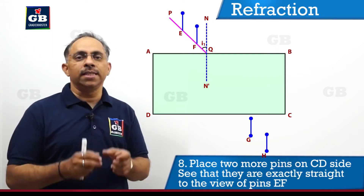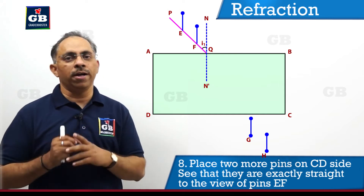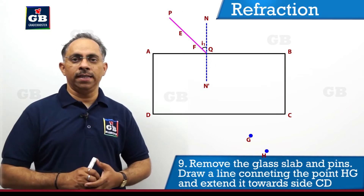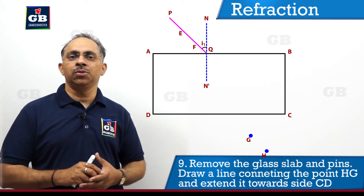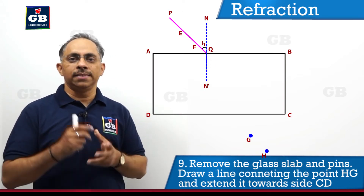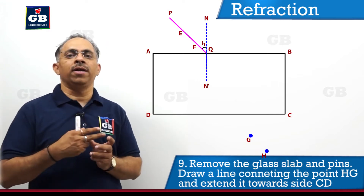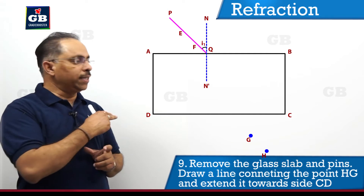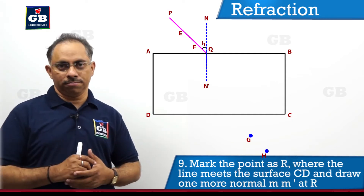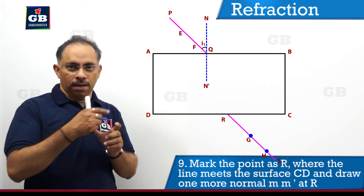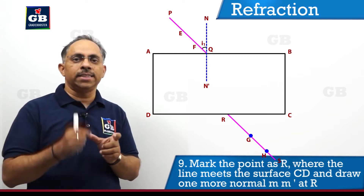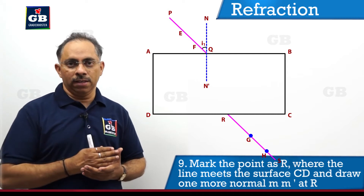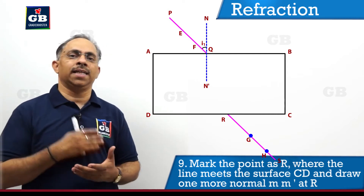Once pins G and H are marked, I mark those two points on the paper, remove all the pins, and take away the glass slab. Then I join points G and H and extend the line to meet the surface CD at point R. This line represents the light ray that has emerged out of the glass slab.